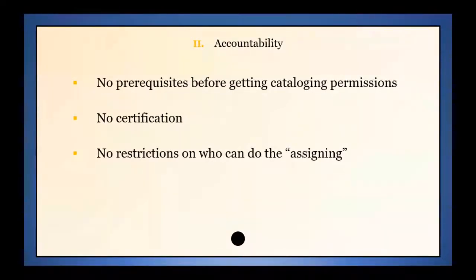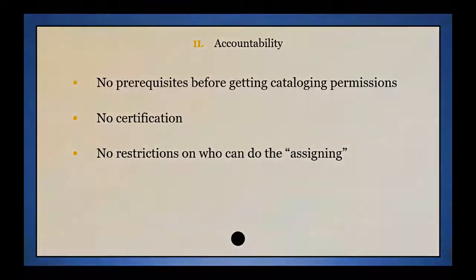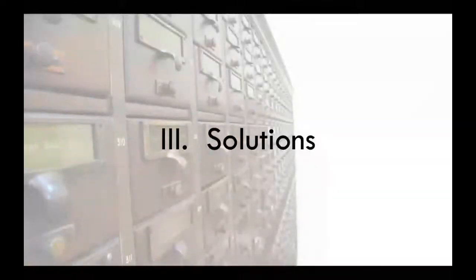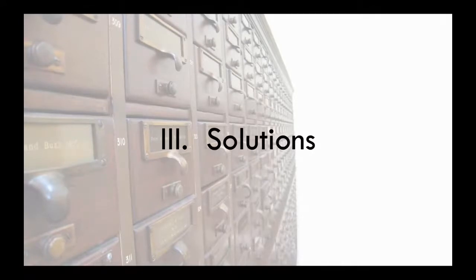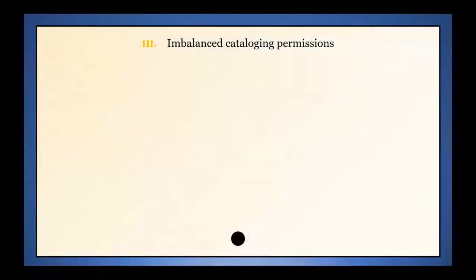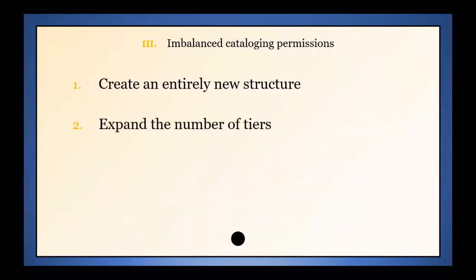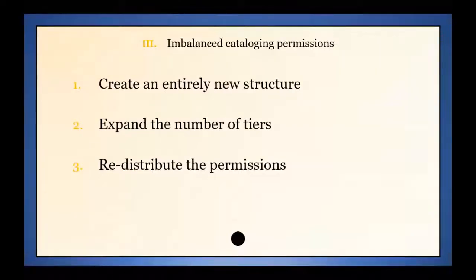Anyhow, those were the problems. Here is what we decided to do. I'll give a very quick overview of our strategy first, and then go into more details when I talk about the process of implementation. In terms of having unequal cataloging tiers, because we were unhappy with the current structure, we decided to build an entirely new one. We started from the ground up. We made a structure that had more levels, and we completely remapped what permission was assigned to each tier.